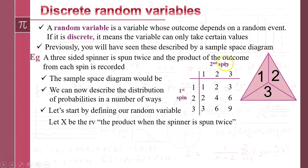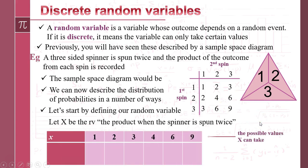If you have a look at the table, clearly it can be 1, 2, 3, 4 — it can't be 5 — it can be 6, it can't be 7 or 8, but it can be 9. So there are our values that it can take. The bottom line is going to be the probabilities.